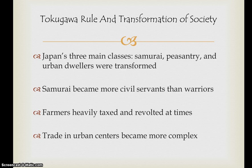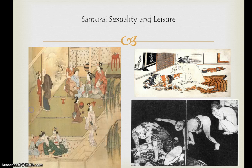When farmers are starving or being treated badly, revolt will always happen, so occasionally the oppressed peasant class would revolt. Another result of the transformation under Tokugawa rule was trade in urban centers becoming more complex. These are some of the key developments in Japan from this time period.